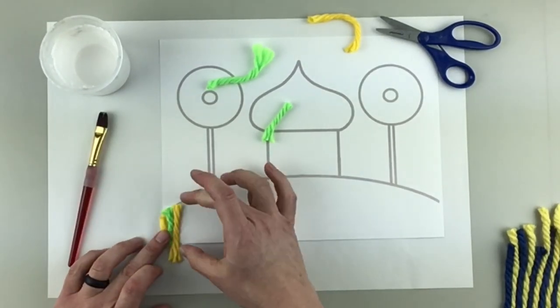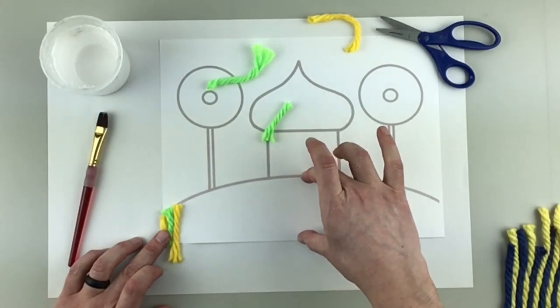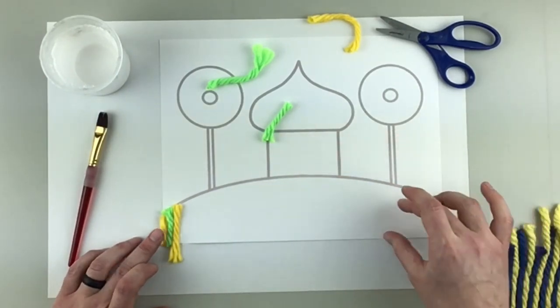My pieces will keep getting longer and longer. And then once I hit the middle, they'll get shorter, shorter, shorter.